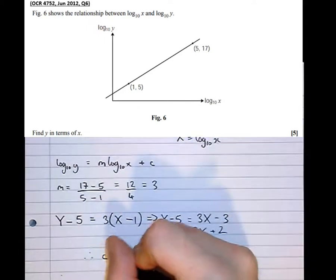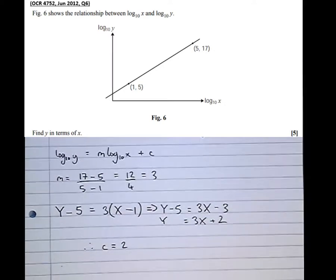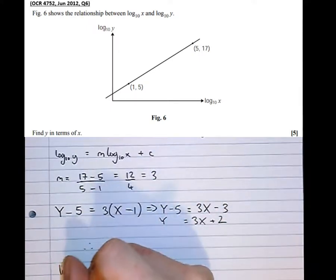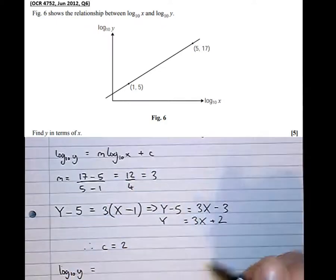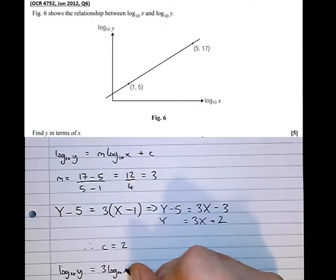Therefore, the y-intercept is 2. So now subbing those into what the equation actually means, we get log to the base 10 of y equals m, which is 3, log to the base 10 of x plus c, which is 2.